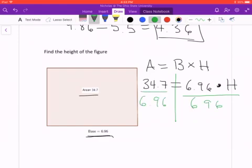And 34.7 divided by 6.96 is 4.9856. Let's just round to, let's round this to two decimals. So 4.99.